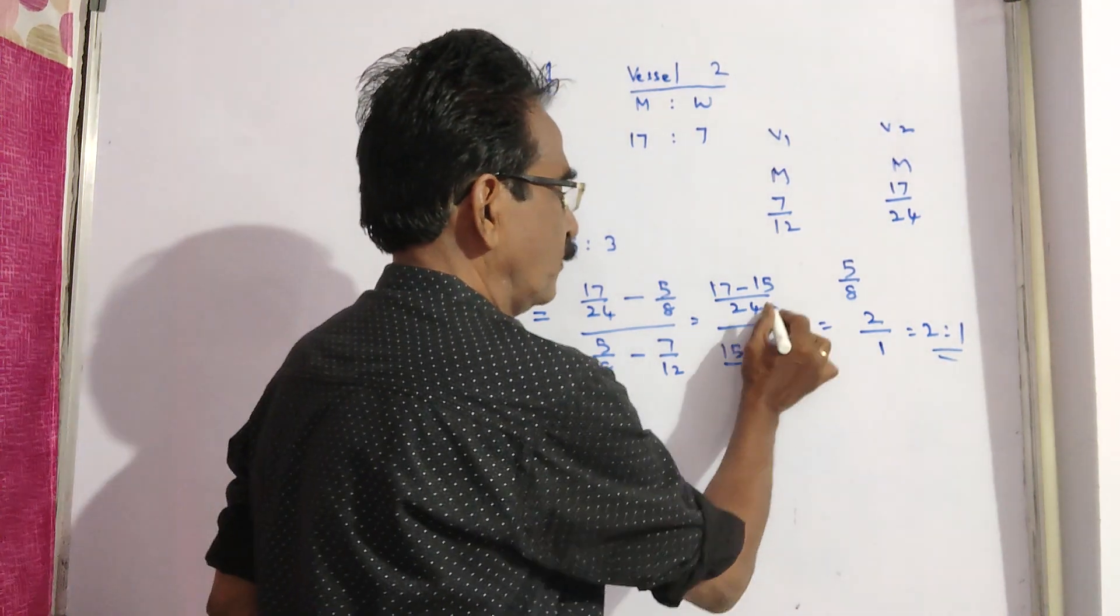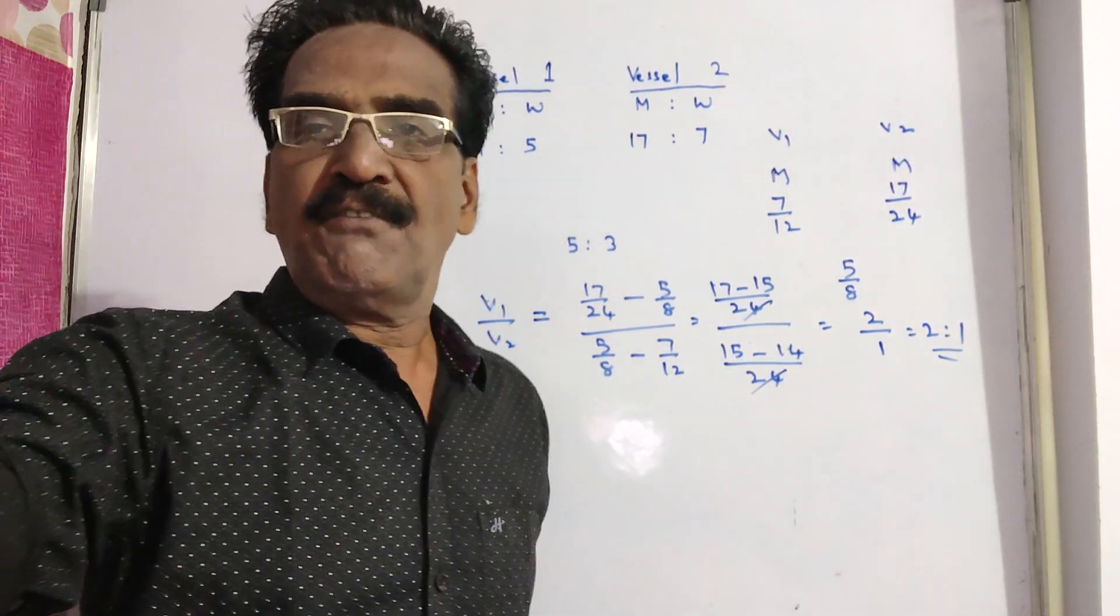2 is to 1 is your answer. The 24 gets cancelled. 2 is to 1 is your answer.